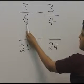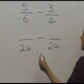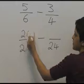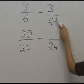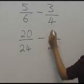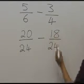Because you've multiplied this by 4, we need to treat the top equally, so 5 times 4 gives us 20. Because we've multiplied the denominator of this fraction by 6, we need to treat the top equally, so 3 times 6 is 18.